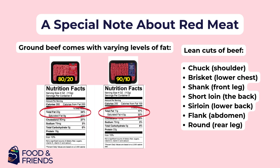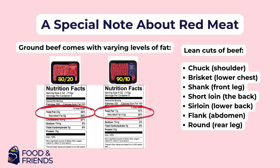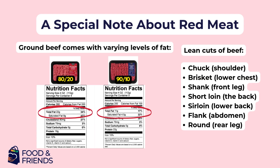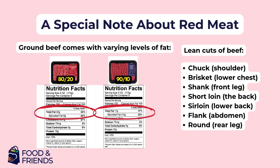You can find more details about the nutrition on the Nutrition Facts label. When purchasing steak, look for cuts that have less visible fat marbling. Naturally lean cuts of steak include chuck, brisket, shank, short loin, sirloin, flank, or round.